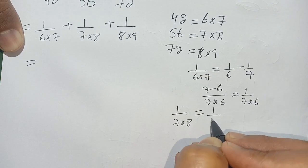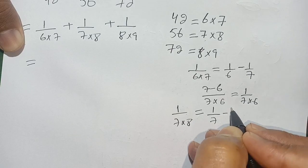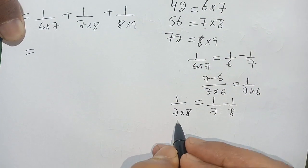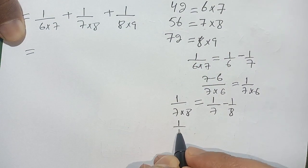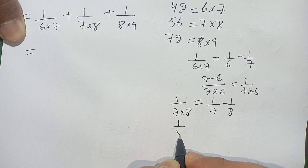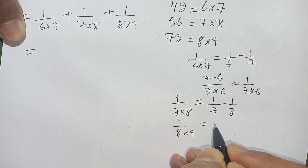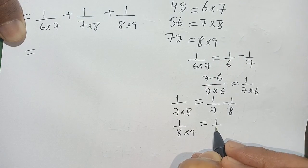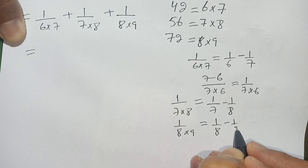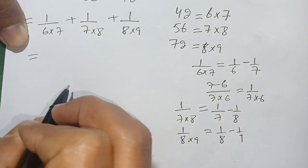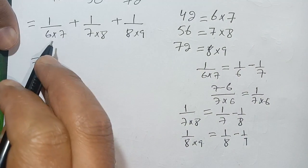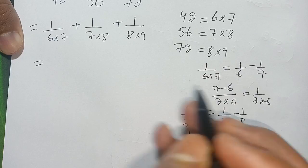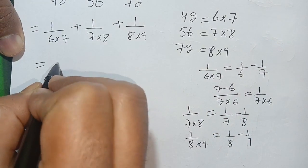Same case with the third term: 1 divided by 8 times 9 can be written as 1 divided by 8 minus 1 divided by 9.